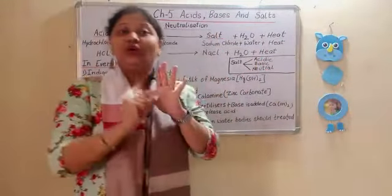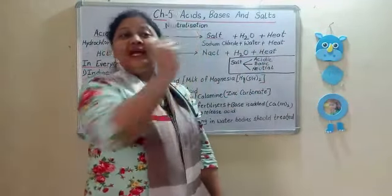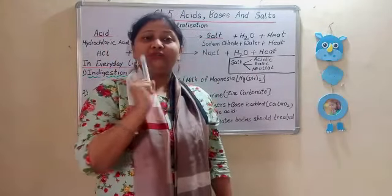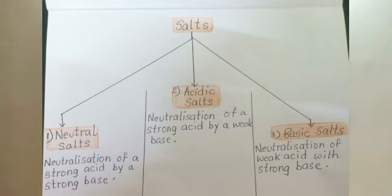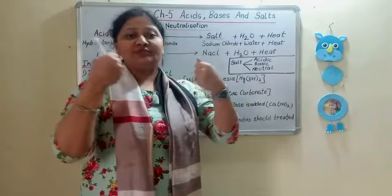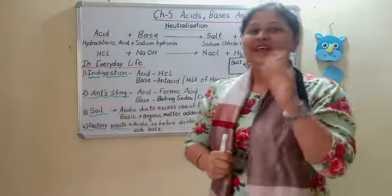Now, salt is of three types: acidic salt, basic salt, and neutral salt. Acidic salt is formed when a strong acid reacts with a weak base. Basic salt is formed when a strong base reacts with a weak acid. Neutral salt is formed when a strong acid and a strong base neutralize each other.